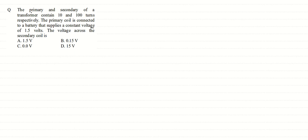In this question, we are given the primary and secondary of a transformer containing 10 and 100 turns respectively. The primary coil is connected to a battery that supplies a constant voltage of 1.5 volts. We need to find the voltage across the secondary coil.